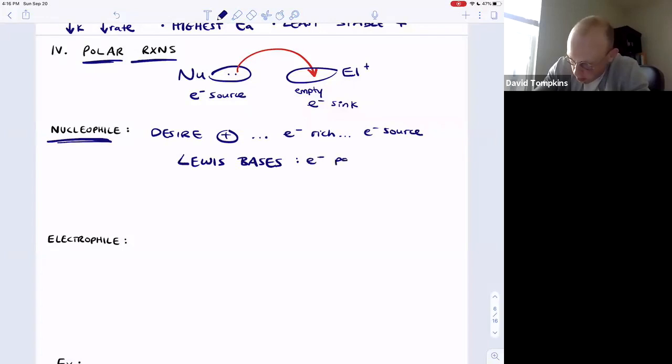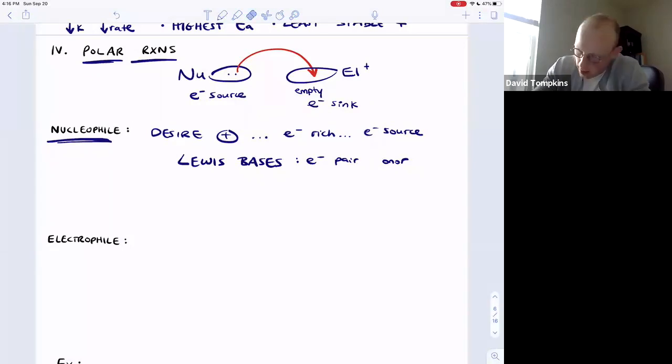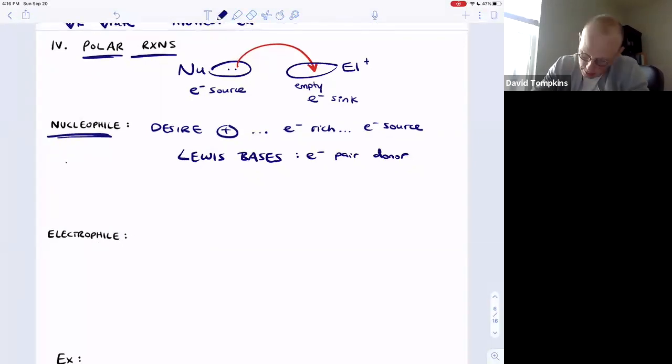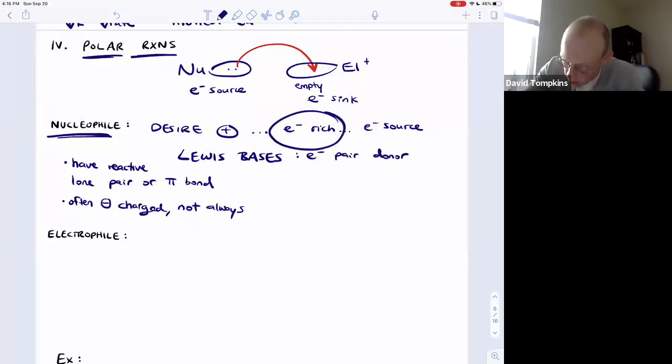It's just a new term for Lewis base. Now be able to recognize examples. Generally they have a reactive lone pair or pi bond. Often they are negatively charged but not always. Those extra lone pairs and negative charges are indicative that they have electron density to donate or they are electron rich starting out.